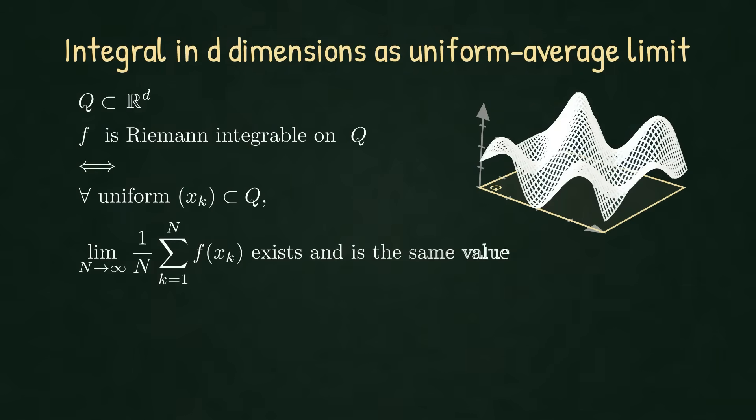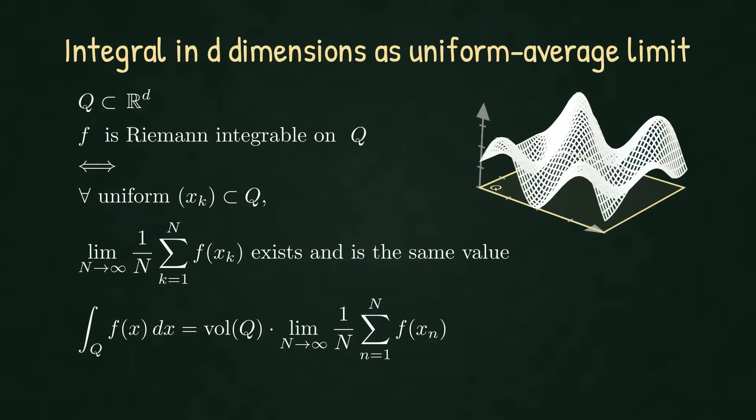We say that F is Riemann integrable on Q if one condition holds. For every uniform sequence inside of Q, meaning every sequence that distributes itself correctly across all subboxes, the average settles to a single value, independent of which uniform sequence we choose. That common limit defines the integral. And multiplying it by the volume of this hyperbox Q gives the classical normalization.